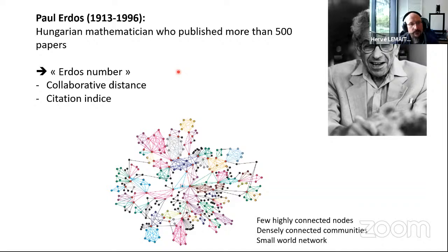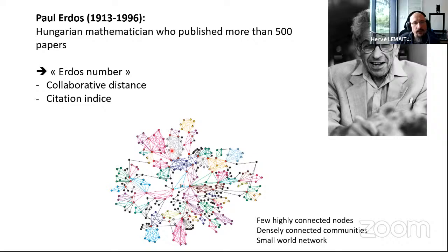You look at all the papers of an author and see how the other authors constitute a network. For most of them you see a few highly connected nodes and also very densely connected communities — teams working together are grouped together. This has the characteristics of a small-world network. It makes sense — we don't work with random people, we work with people we know or we do research with.